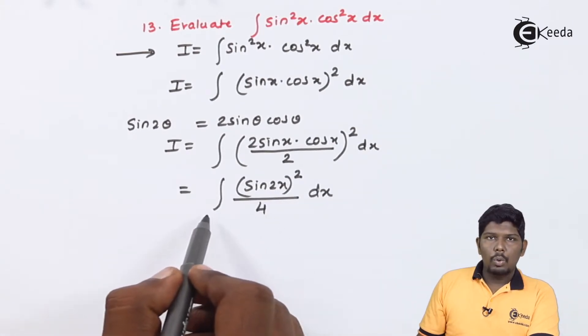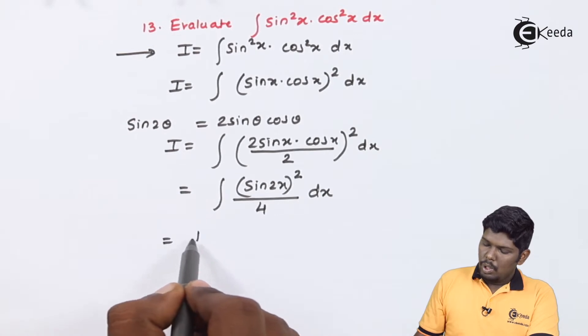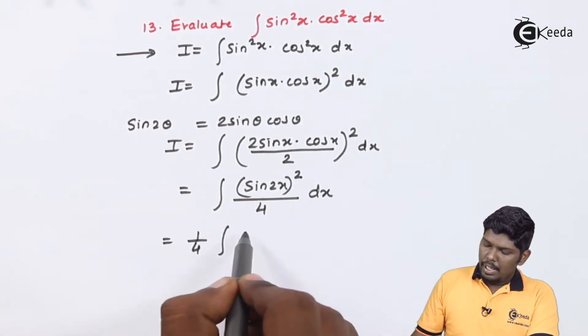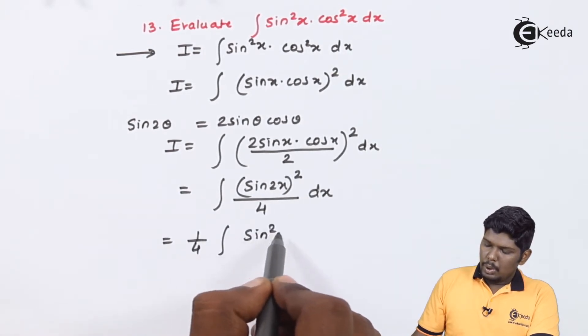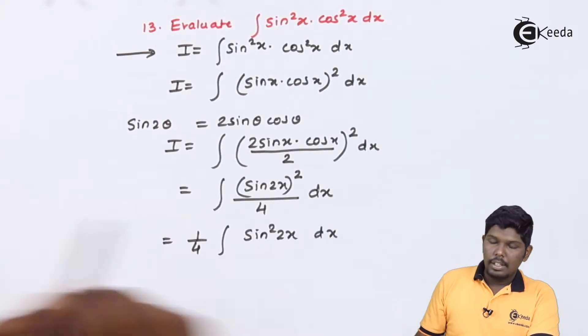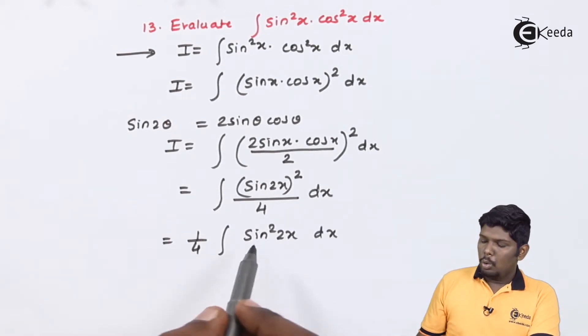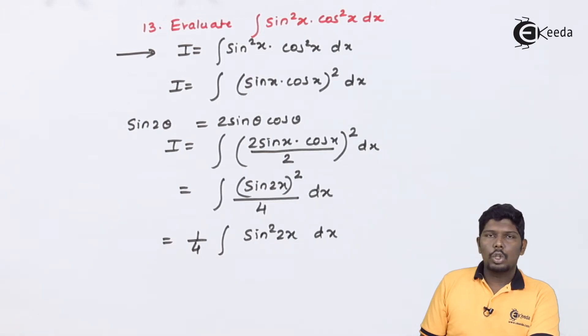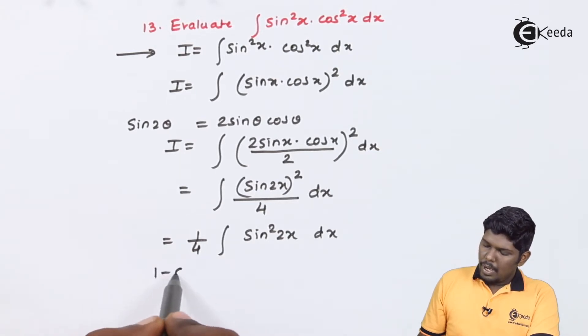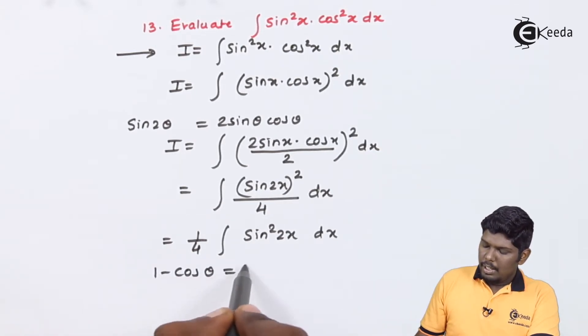Taking 4 constant outside, this will give you 1/4 ∫sin²2x dx. In the previous video we have seen how to integrate sin²2x or cos²2x. For that we will go for half angle formulas as 1 - cos θ is 2 sin²(θ/2).